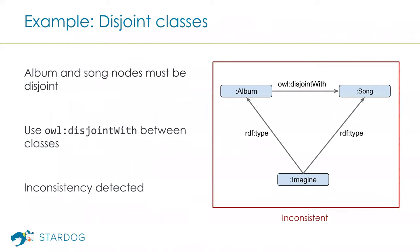Suppose we want to ensure that album and song nodes in our graph are disjoint — we want to detect or prevent the case that a node like the Imagine node is both declared to be an album and a song, because we want two separate nodes: one for the song and one for the album. We can use the OWL construct owl:disjointWith to declare that the album and song classes are disjoint. When we load this to our database and use a reasoner, any inconsistency will be detected.